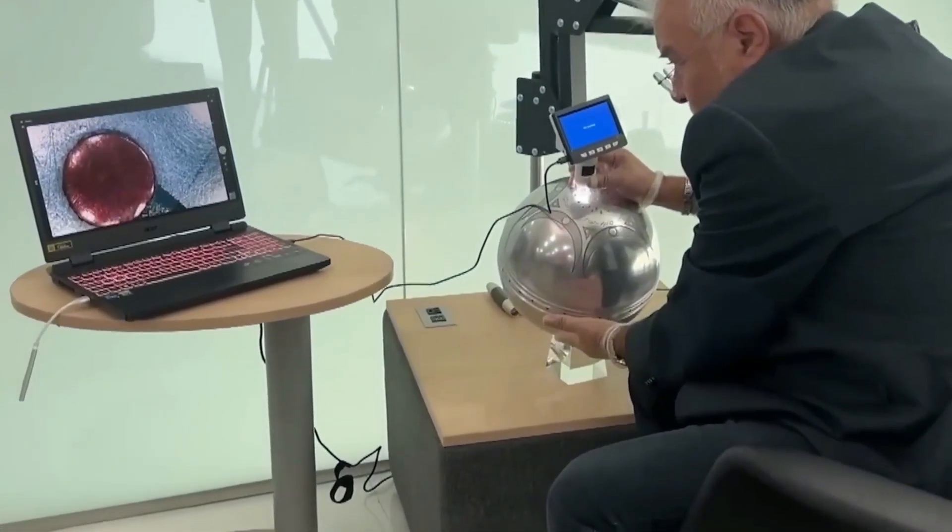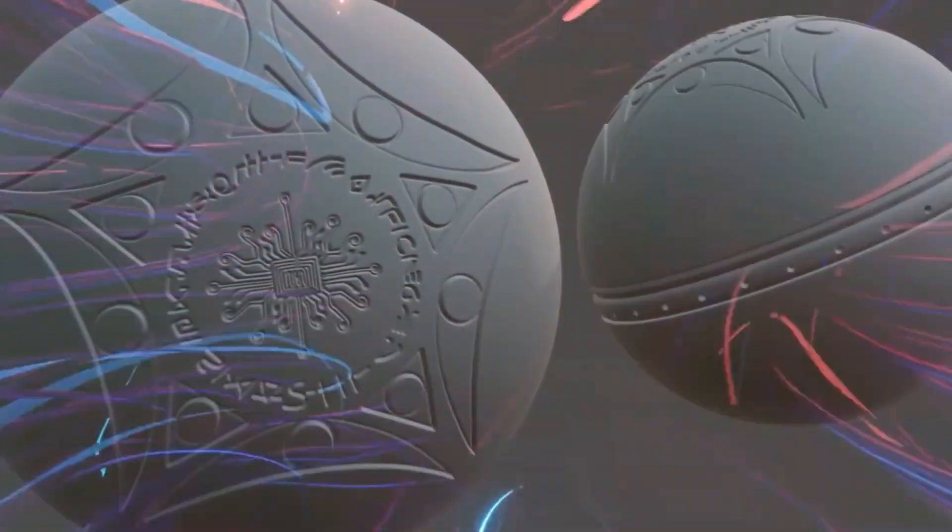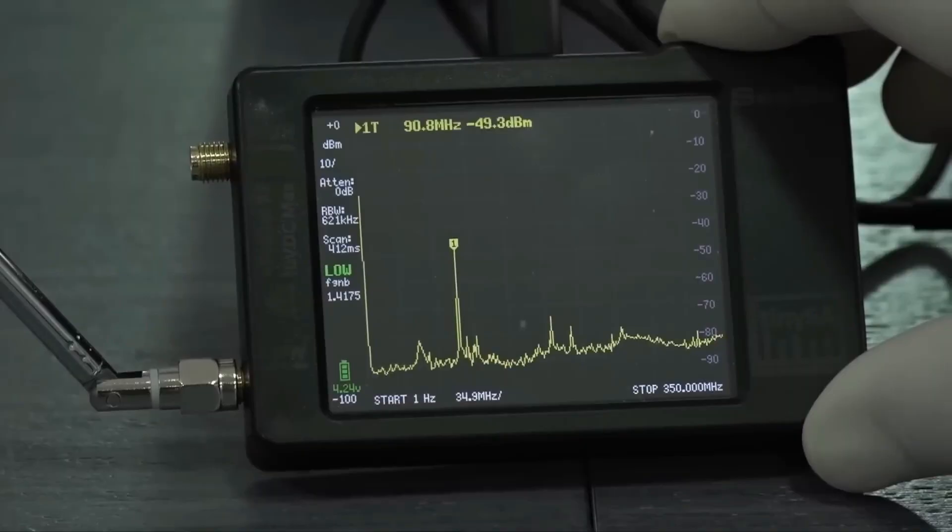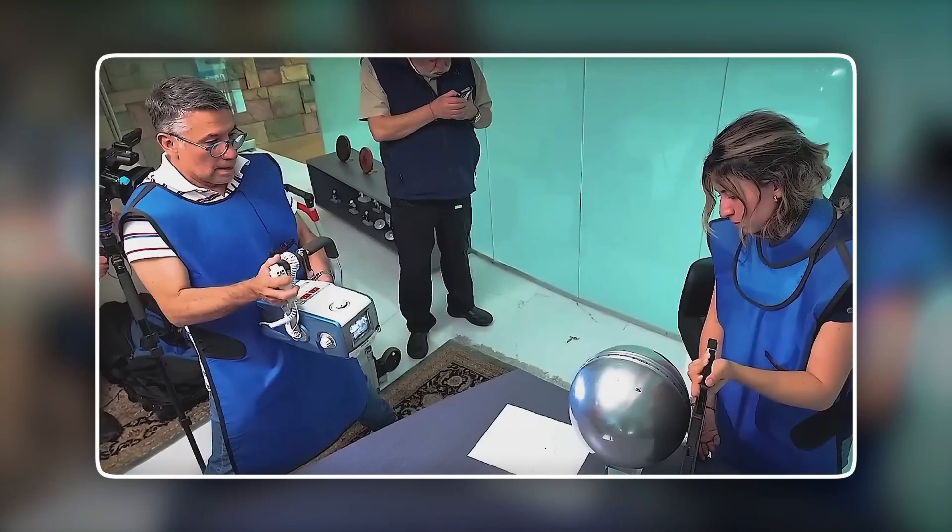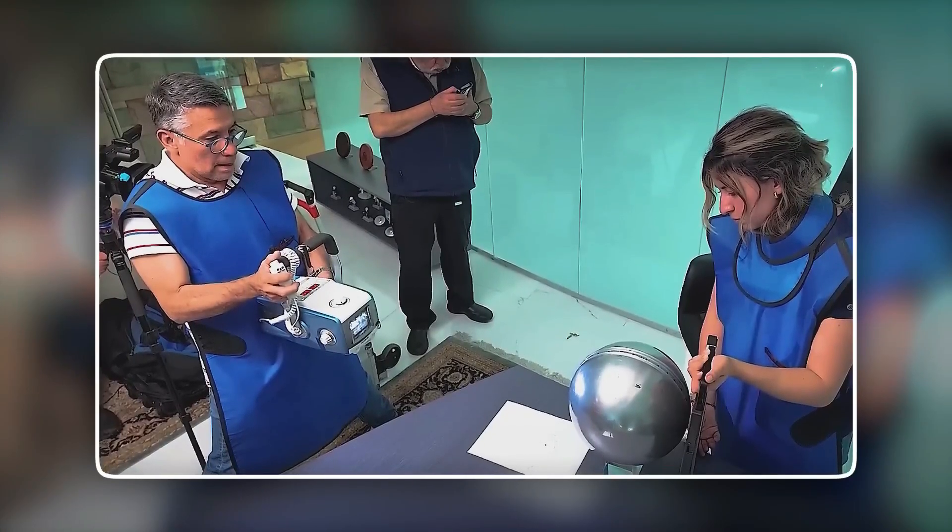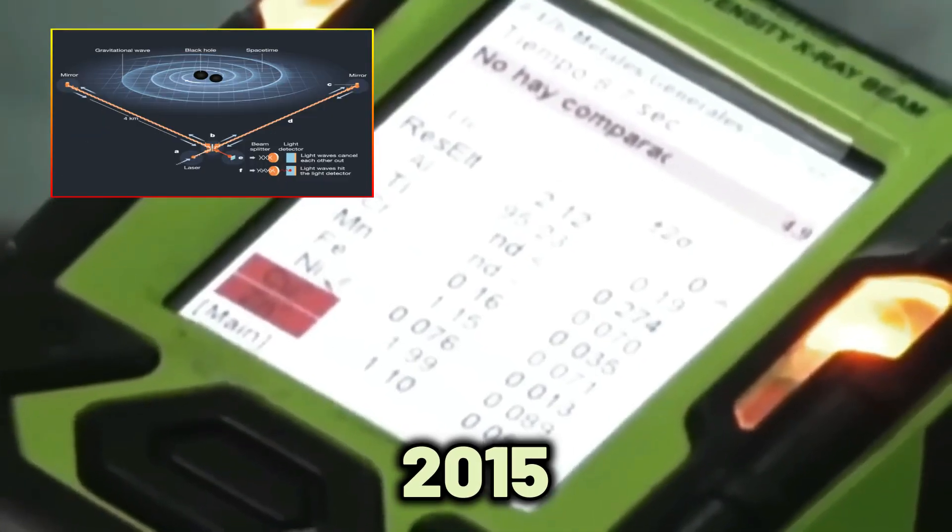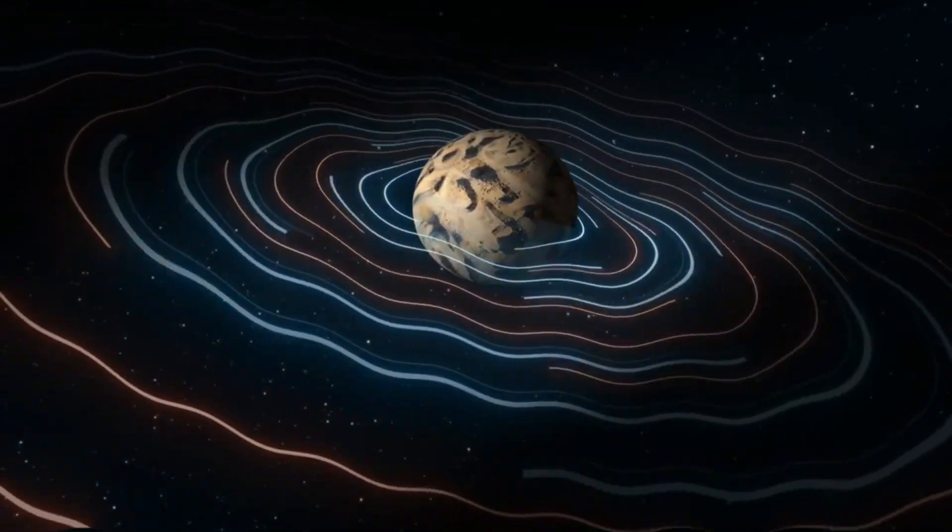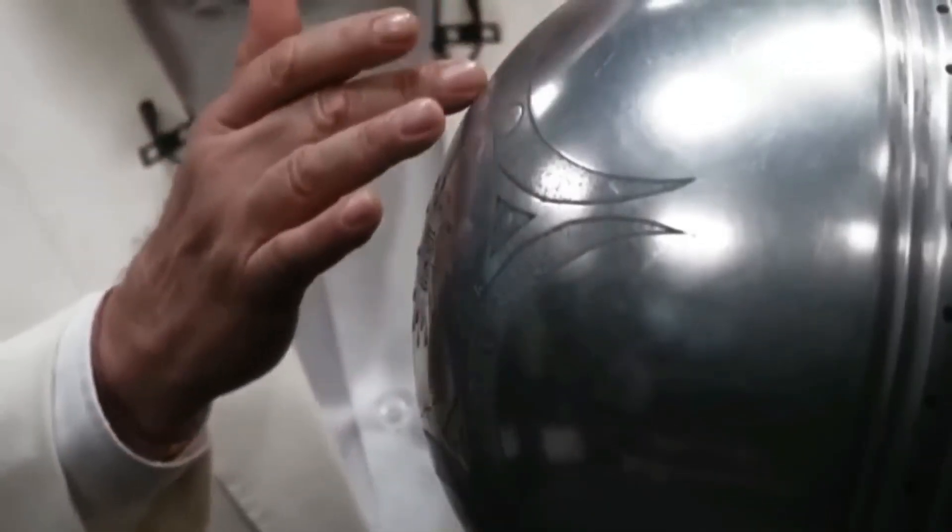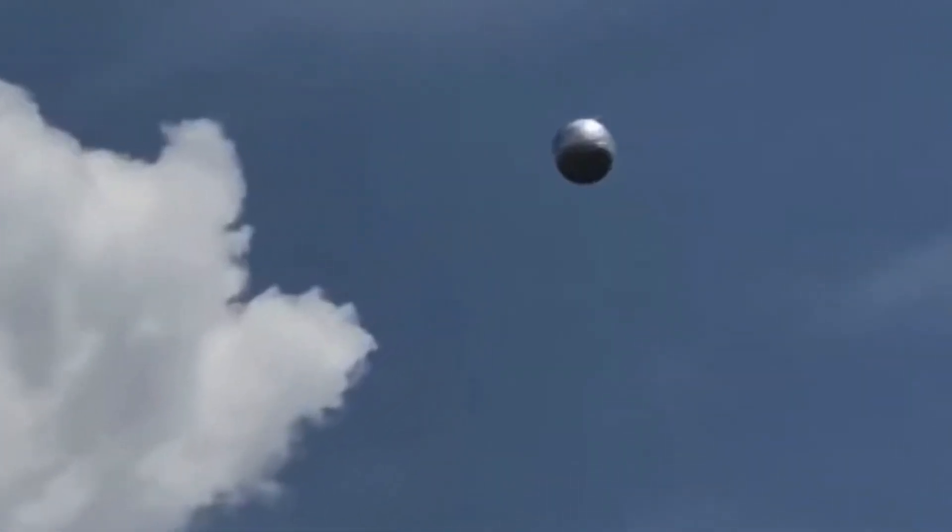And that was only layer one. Deeper glyphs refused to behave like numbers. They behaved like frequencies. Resonance maps that froze the room because everyone had seen these waveforms before. LIGO measured them in 2015. Gravitational waves from colliding black holes. The sphere's etchings didn't just resemble them. They matched them. Identical signatures from events a billion light-years away, encoded on a metal ball in Colombia.